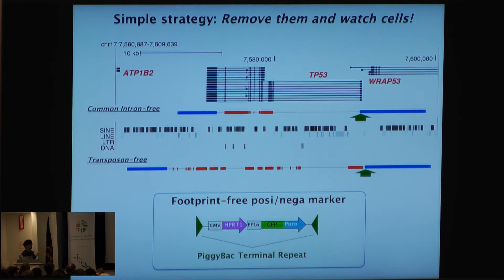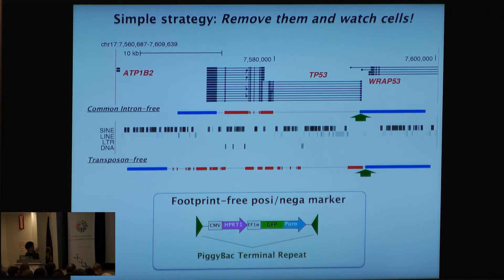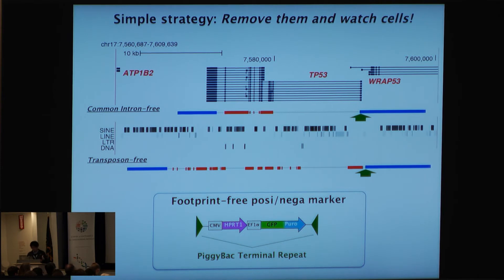The Harvard group, including Dr. Church, already published this kind of marker which uses PiggyBac — a DNA transposon sequence, specifically the PiggyBac terminal repeat. Once we have that marker in the living cells, by overexpressing the PiggyBac enzyme, you can eliminate the whole marker without any scar. So basically, we can just swap the wild-type DNA part with the synthetic ones.